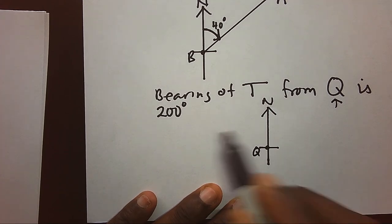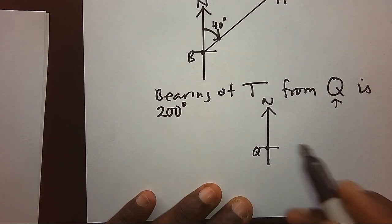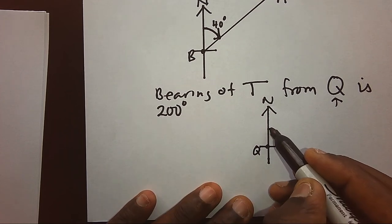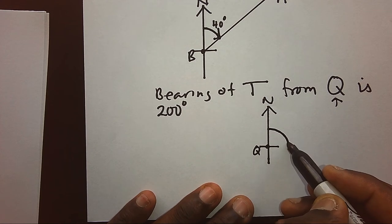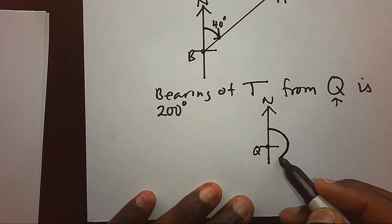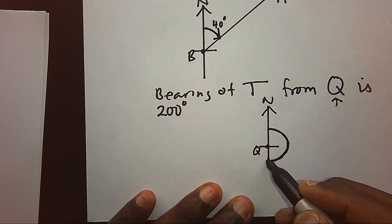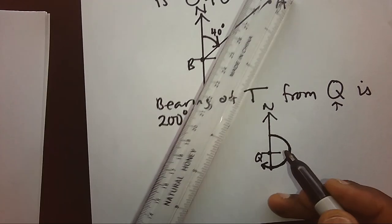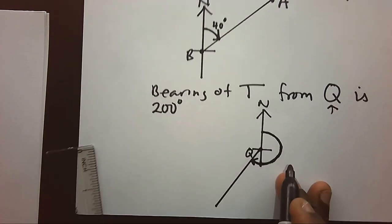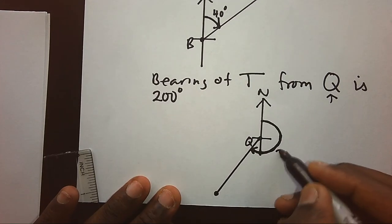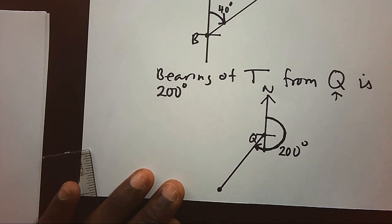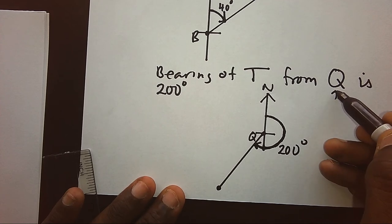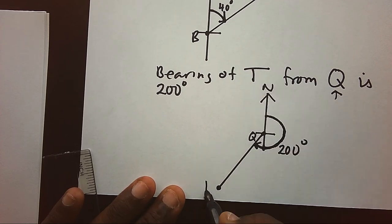If I want the bearing to be 200, that means from my north I will move clockwise. I will pass 90, I will pass 180. Just after passing 180 I have to stop. Why? Because that region will be representing our 200 degrees, so I will be able to see position T.